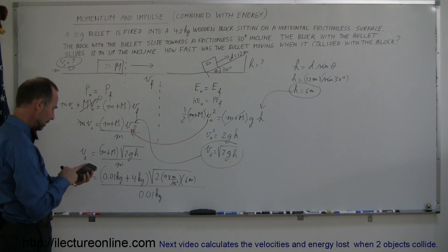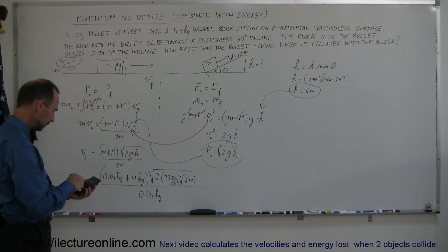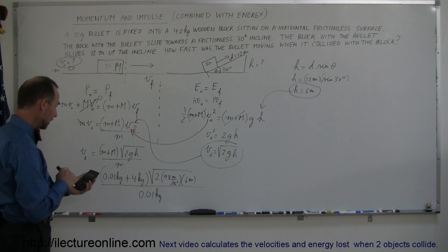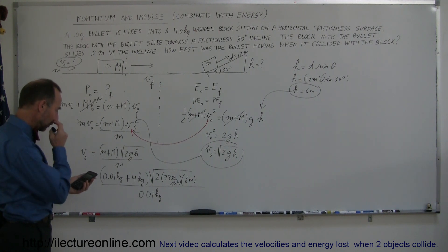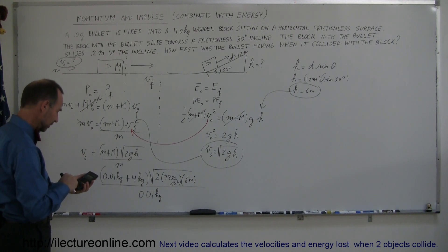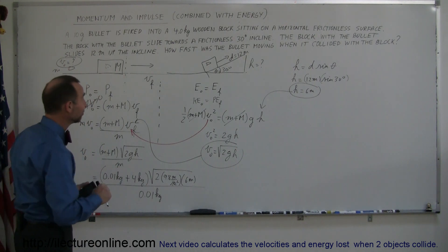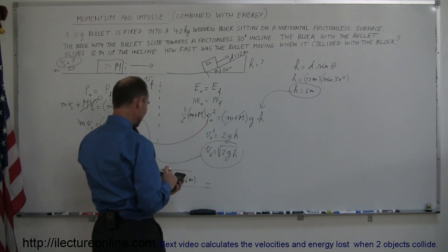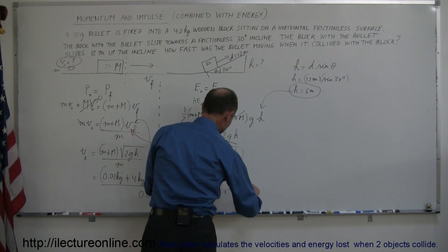Recalculating: 2 × 9.8 × 6, take the square root, multiply by 4.01, then divide by 0.01 — which is the same as multiplying by 100. Sure enough, that's quite a velocity. We get approximately 4,350 meters per second, rounding to about 4,350 m/s. That's definitely a supersonic bullet coming out of a very big gun, but it's all physics and it works.